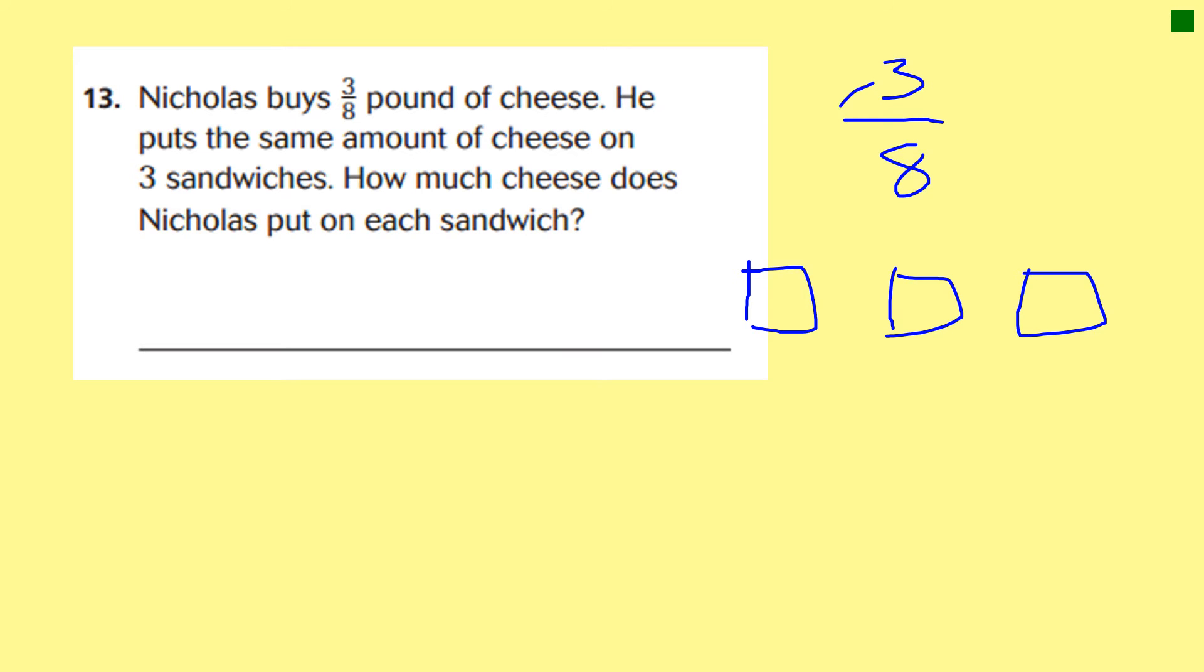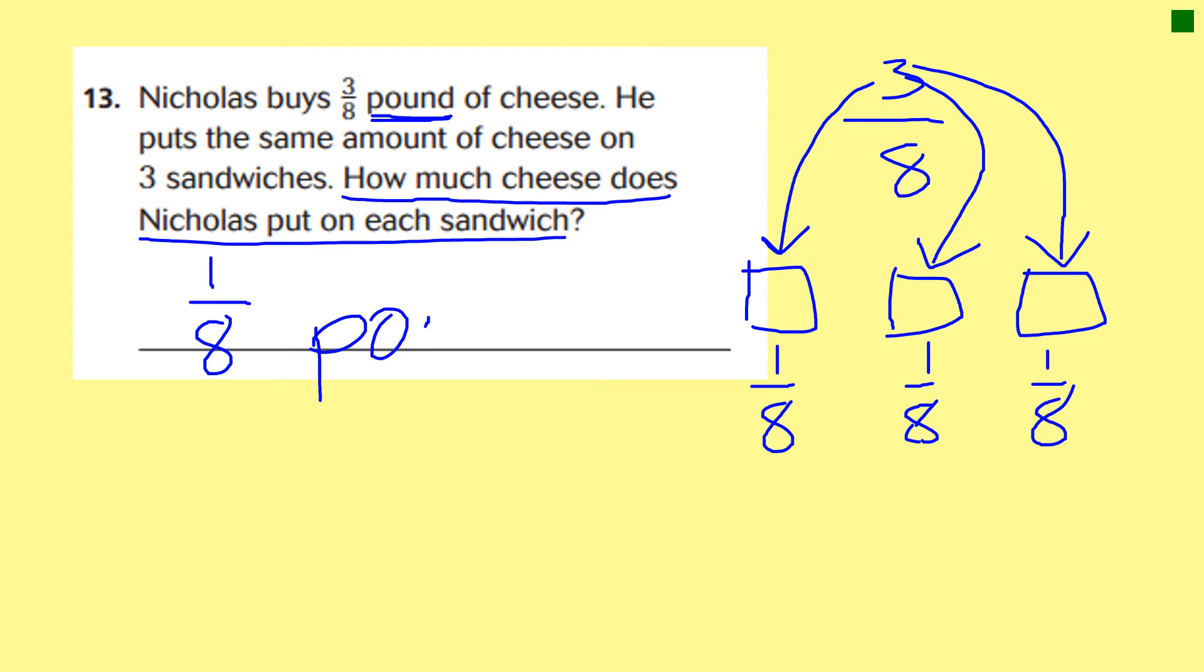So, let's put 1 out of the 8 pounds here. Another of the 8 pounds on that sandwich. And another of the 8 pounds on that sandwich. So we're taking that 3 eighths, and we're going 1 eighth on this sandwich. 1 eighth on that sandwich. 1 eighth on that sandwich. So, how much cheese does Nicholas put on each sandwich? 1 eighth pound. Does that make sense to you? If you have 3 eighths pounds and 3 sandwiches, why don't we give everybody 1 eighth pound on a sandwich? I wonder, is that a lot of cheese? 1 eighth pound? Probably. All right. Let's keep going.